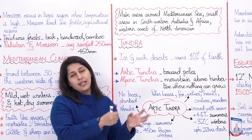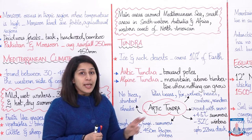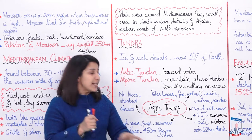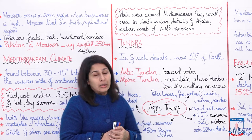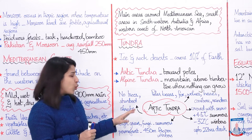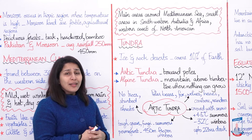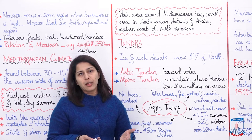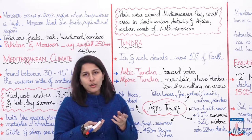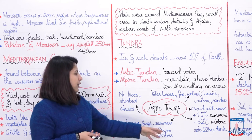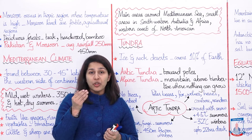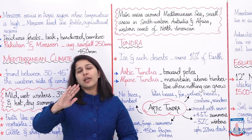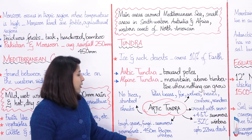In arctic tundra, there is so much darkness that the longest night can be up to 22 hours. There are no trees — only stunted shrubs can grow. That's because the top soil thaws in summers slightly, and small plants, tough grass, and fungi can grow. But when the temperature goes back down, the topsoil freezes beneath many layers of ice — we call this permafrost.